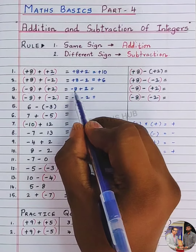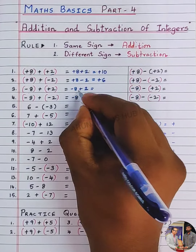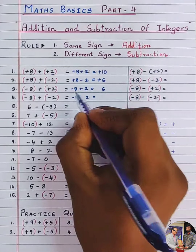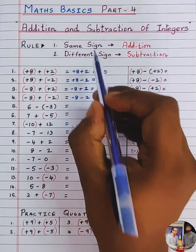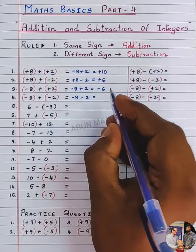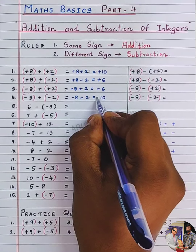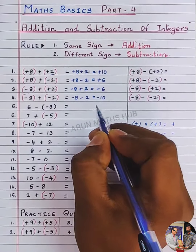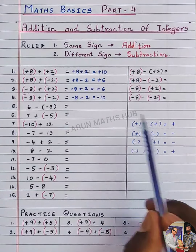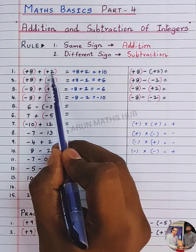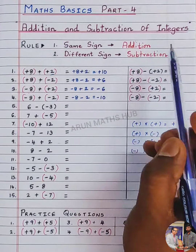Now you have different sign — minus and plus. Different sign means you should do subtraction. 8 minus 2 is 6, and the bigger number's sign is minus, so the answer is minus 6. Now same sign — same sign means addition. 8 plus 2 is 10. What is the bigger number's sign? It is minus, so the answer is minus 10.